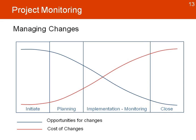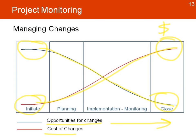We also need to consider making changes to the project when we see variations or opportunities to improve. There is a difference between the opportunities available for changes and the cost of those changes. At the beginning of the project, there are high opportunities for changes because the cost is low — changes are being made on plans. As we make progress, these curves reverse, so near the end of the project, the cost of changes will be higher and there will be fewer opportunities to make them.